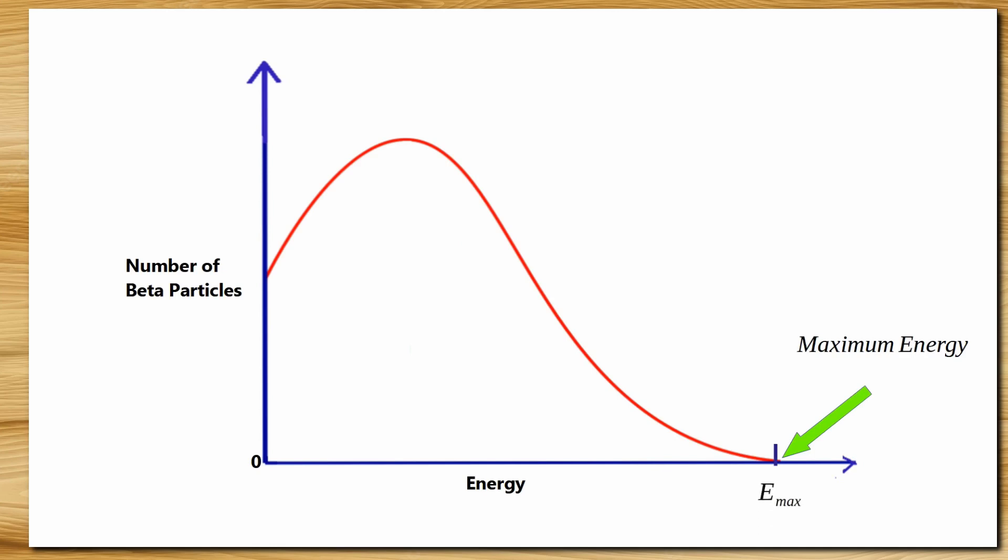All energies are possible from zero to maximum value or Emax. What is more interesting is that this maximum energy is same as the difference between the rest mass energies of two nuclei. So this is the only energy we expect to have, but we have actually got a distribution of energies. Say some beta particles have energy equal to this, then where this amount of energy is gone? It was the problem.